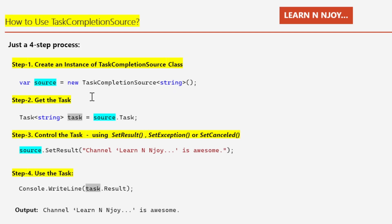Step two: get the task from the TaskCompletionSource instance — using source.Task, which gives us the task created from the TaskCompletionSource. Step three: control the task. We can set the result, set an exception, or even cancel the task using the methods SetResult, SetException, and SetCanceled. Here I'm setting the result by writing source.SetResult("Channel Learn Enjoy is Awesome"), which sets the result for the task.